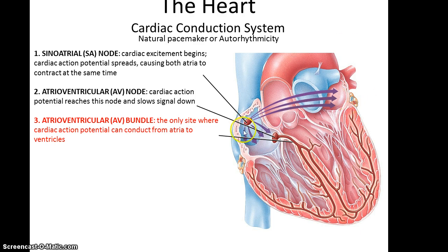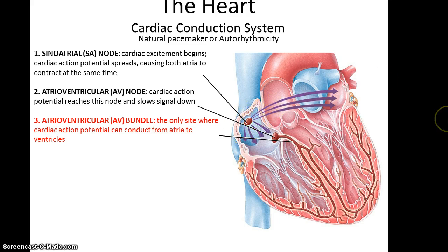The heart has what's referred to as the sinoatrial node. This is basically where the signal starts — it is the natural pacemaker. The cardiac muscle action potential then spreads from the sinoatrial node out to both of the atria, allowing them to contract at the same time.